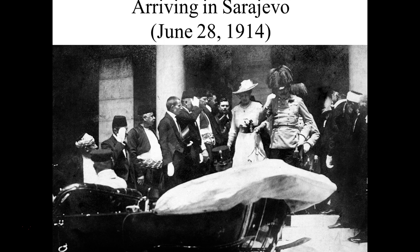The assassin who threw the grenade, Gabrinovich, jumps into the Mijaka River and takes a cyanide pill. The thing was, he got it from some shady guy, so the cyanide pill just makes him throw up — it was too old, the poison didn't work. And the Mijaka River in summertime has evaporated, so he doesn't splash in the water, he smacks into it like a flopping fish in shallow water. The police grab him and take him away. At that point, when someone throws a grenade at you, you'd probably just leave the city — but Ferdinand continues on his route. He goes to city hall, sits in there, and then actually wants to visit people in the hospital.